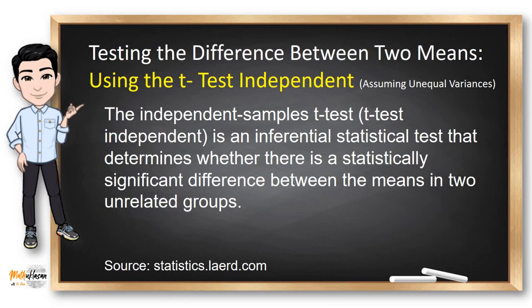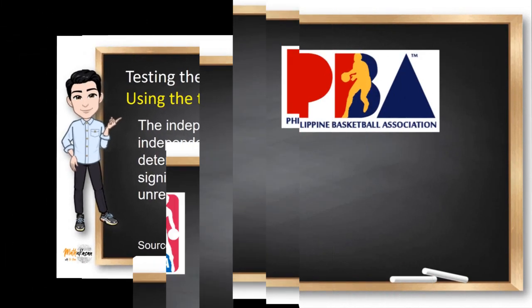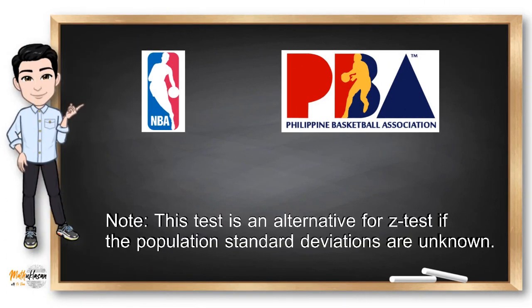The independent samples t-test, also known as t-test independent, is an inferential statistical test that determines whether there is a statistically significant difference between two means in two unrelated groups. To run the t-test independent analysis,